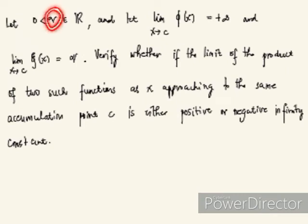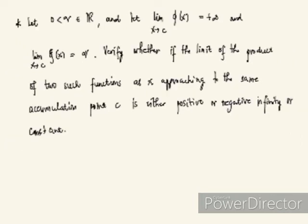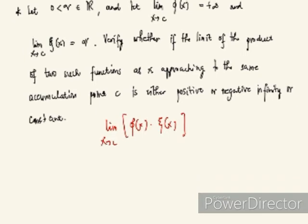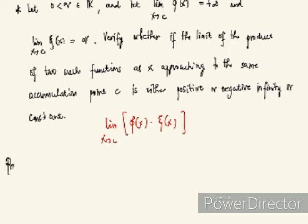Last question: Let ν be greater than 0, a real number. Let the limit of φ(x) as x approaches c equal positive infinity. Also, let the limit of ψ(x) as x approaches c equal ν. We are asked to verify whether the limit of the product φ(x)·ψ(x) as x approaches c is positive infinity, negative infinity, or just a constant.